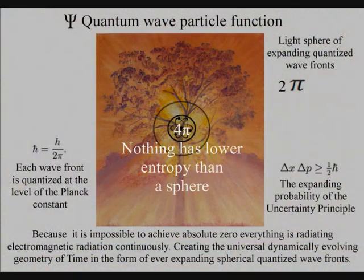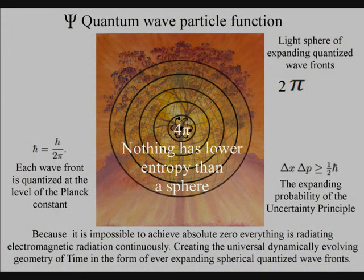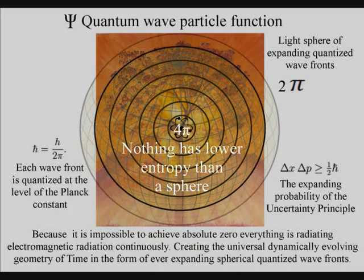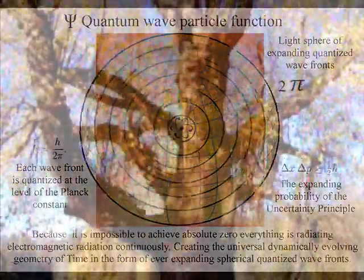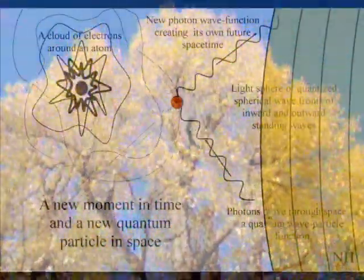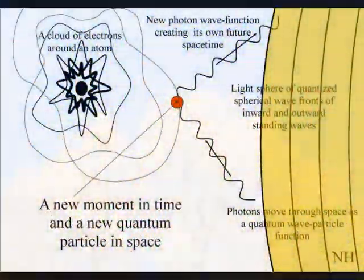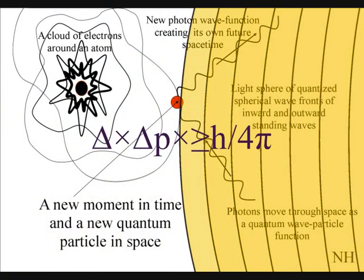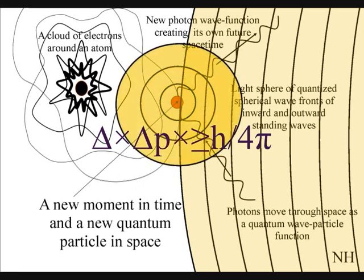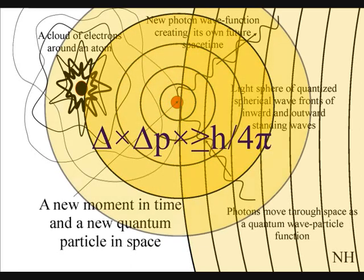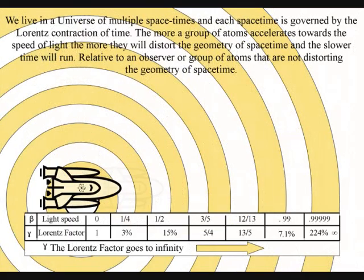The second law of thermodynamics falls out of this theory. The organization for the spontaneous disorganization of entropy is formed by the spherical symmetry of the quantum wave particle function. The spontaneous absorption and emission of light forms the flow of time, with photon energy cascading down and forming greater degrees of freedom for the flow of entropy.